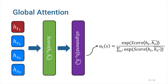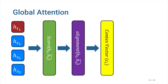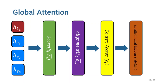So far, we have calculated the scores. The next step is to calculate the alignment vector. As shown in the formula, we simply use a softmax function to convert our score values into probabilities. Given the alignment vector as weights, the context vector ct is computed as the weighted average over all the source hidden states. Given the target hidden state ht and the source-side context vector ct, we employ a simple concatenation layer to combine the information from both vectors to produce an attentional hidden state. The attentional vector is then fed through the softmax layer to predict the next output token.